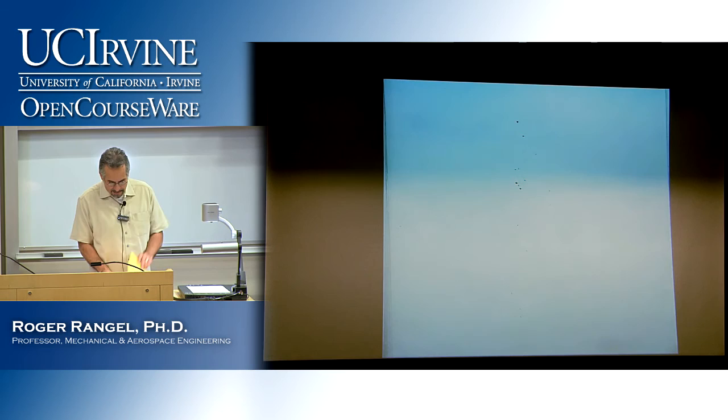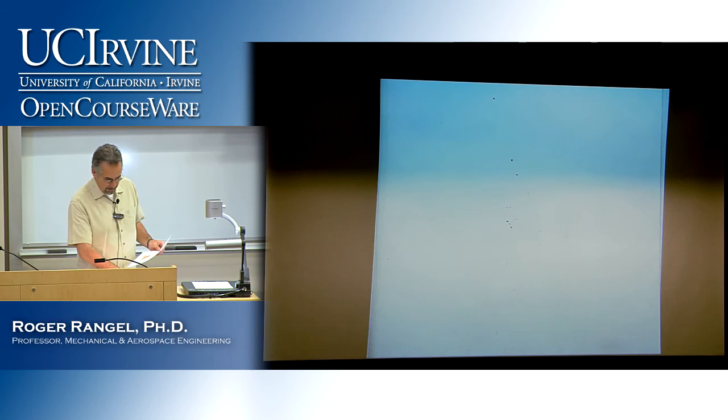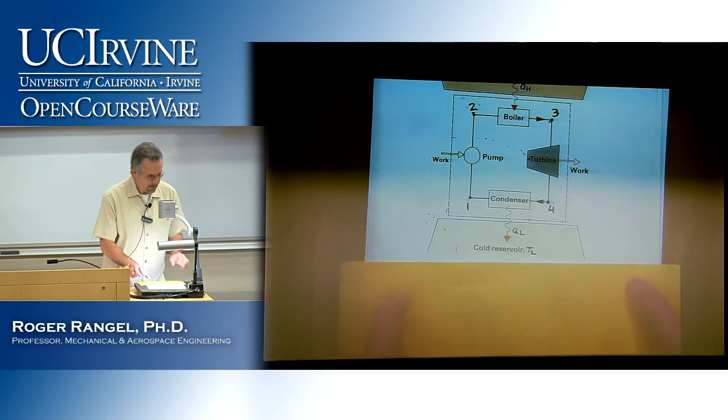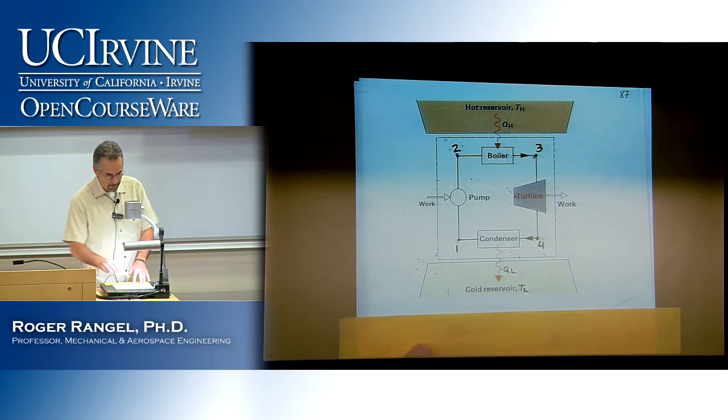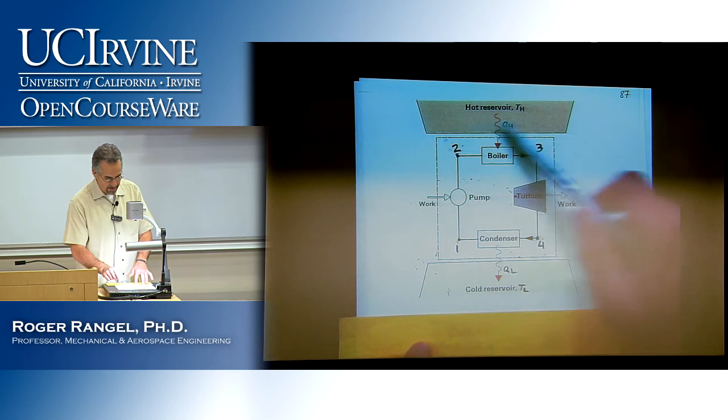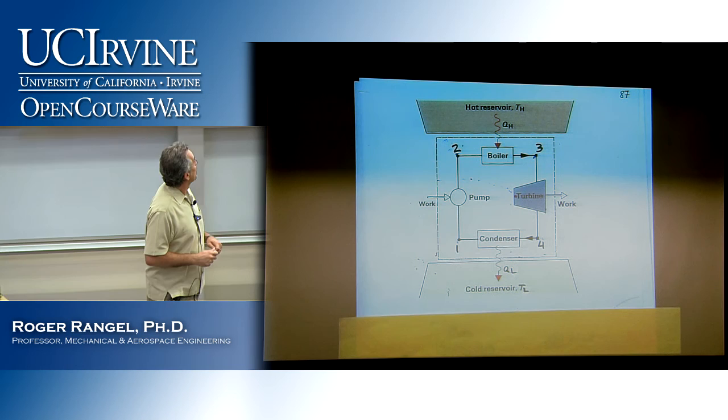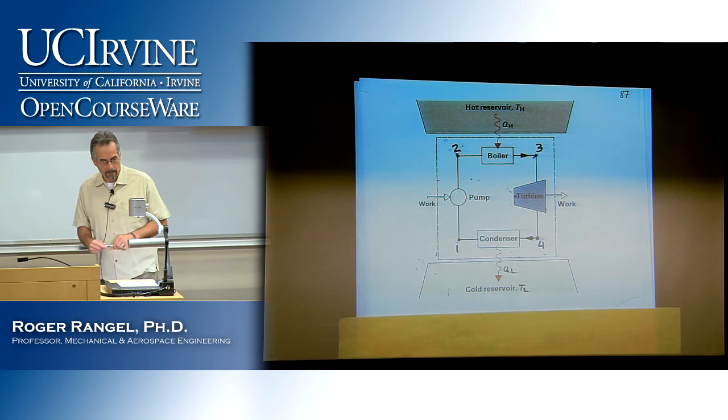What's inside this heat engine — inside this black box? We have actually already seen it. Here is an example we saw earlier: this is what would be happening inside the black box. There is the hot reservoir up here, the cold reservoir down here, and inside the dashed line is my heat engine. We have seen this when we were looking at power plants — this is a very simple schematic of a power plant.